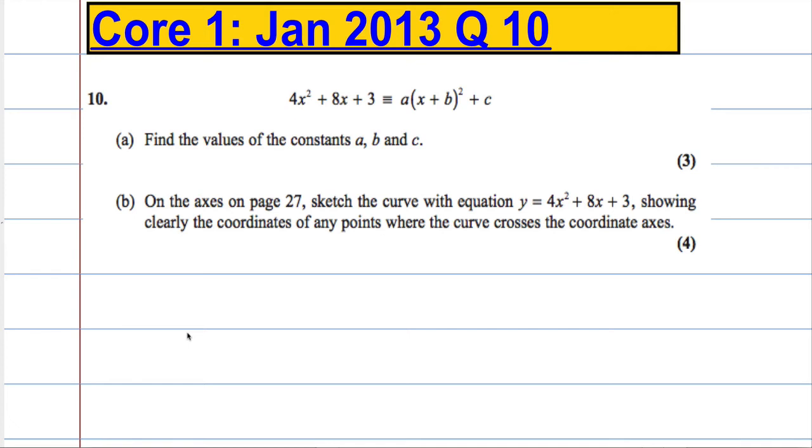Okay, question 10. 4x squared plus 8x plus 3 is identically equal to a times x plus b all squared plus c. Find the values of the constants a, b and c. So essentially what we're asked here to do is complete the square.